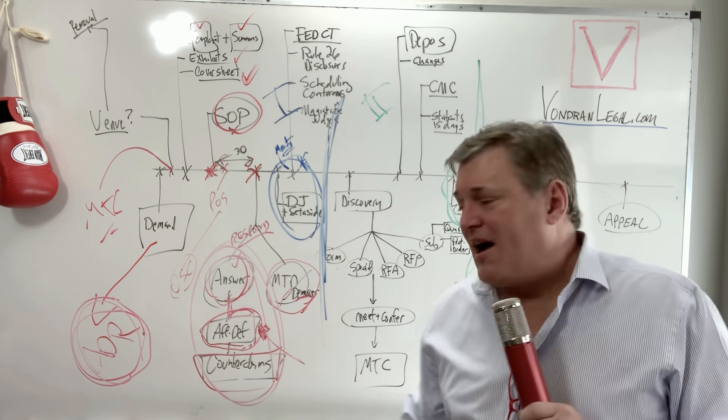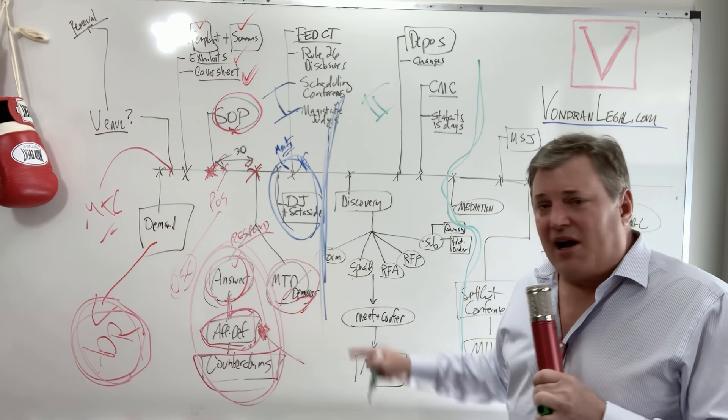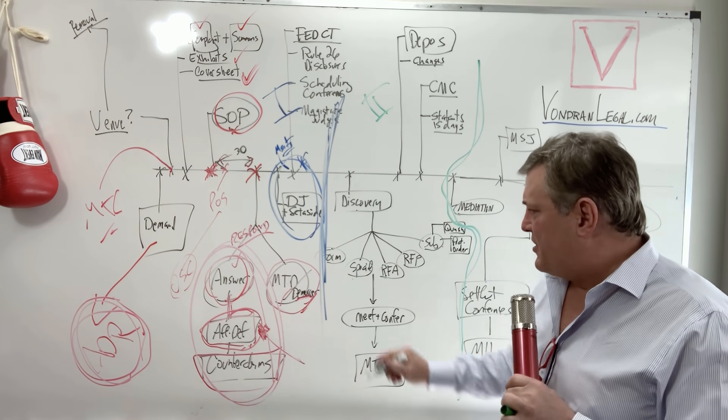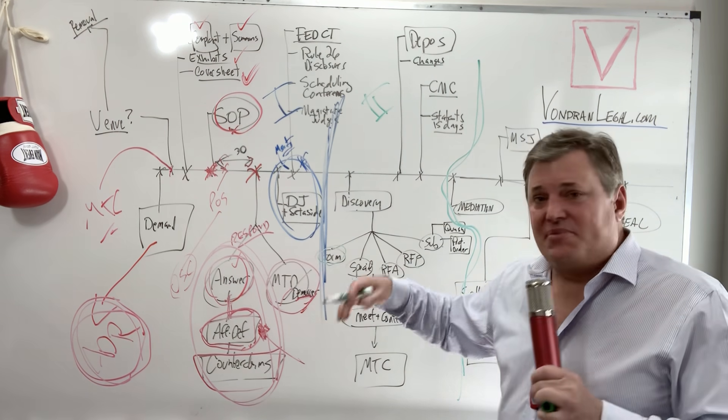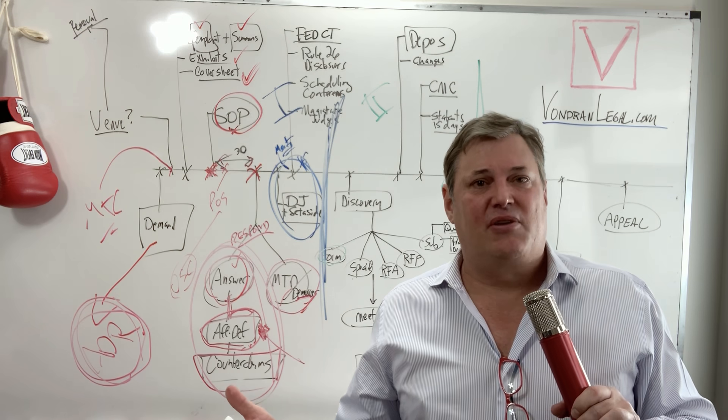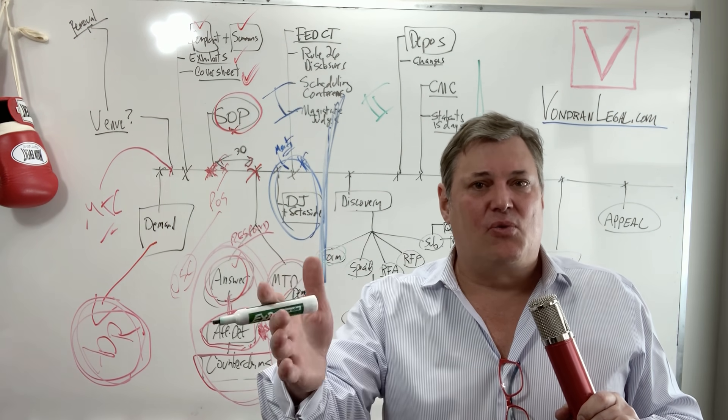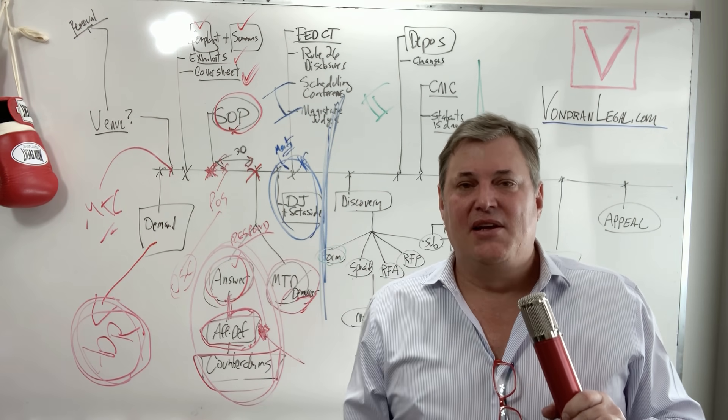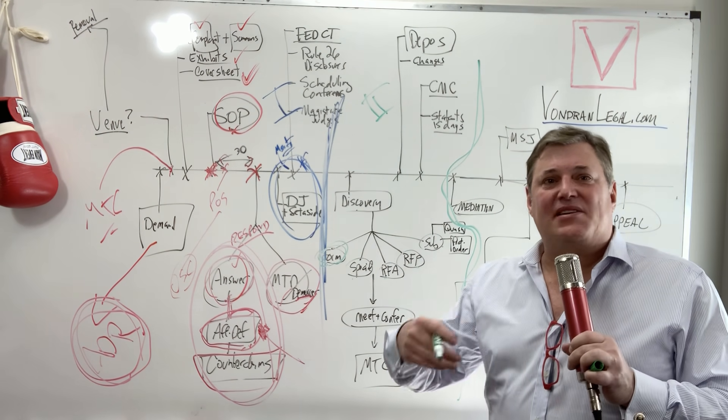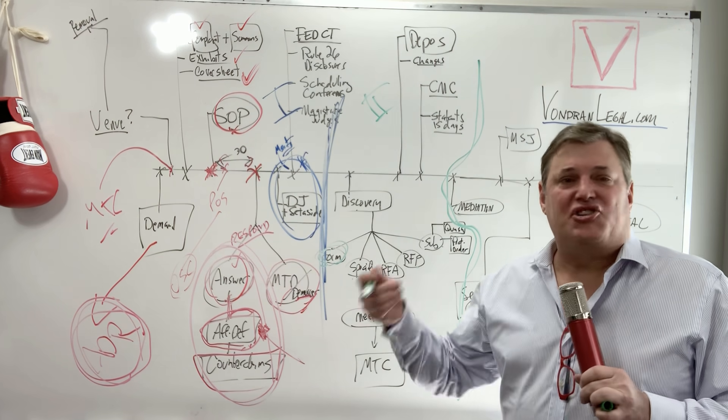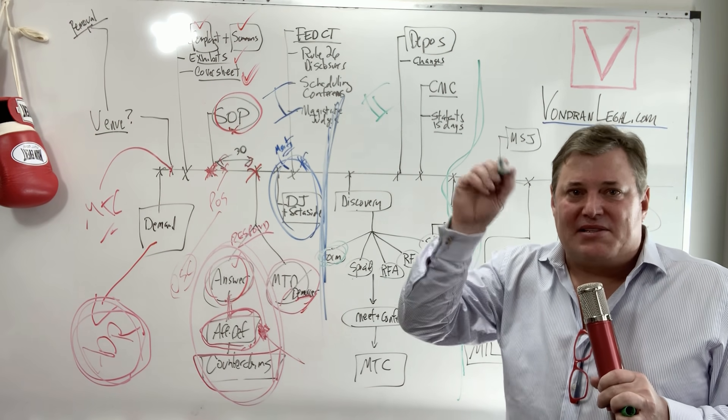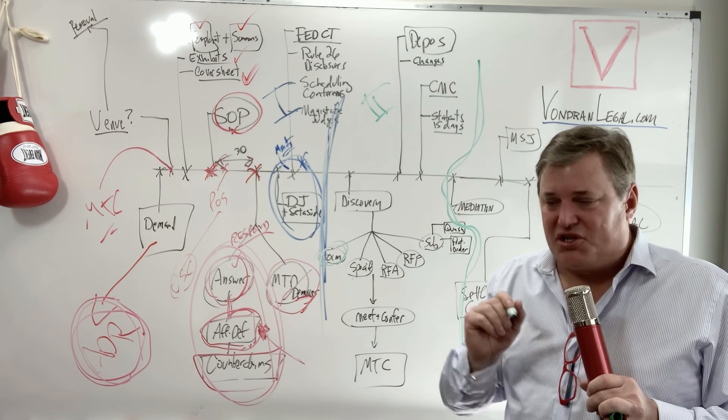So you have form interrogatories. Note though, you don't have those in federal court. This is a state court deal. Form interrogatory. And I'm speaking of California generally, you need to check your own rules. Again, this is general legal information only and not legal advice. Check your own rules in your own state and different rules may vary. But you have form interrogatories are basically pre-printed, just a bunch of documents. They're pre-printed with a bunch of questions. You check the boxes. So it's really easy to ask a bunch of questions.